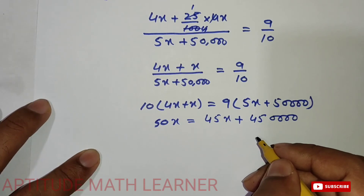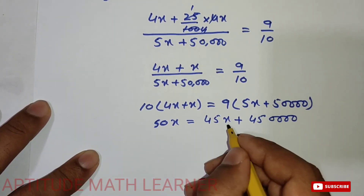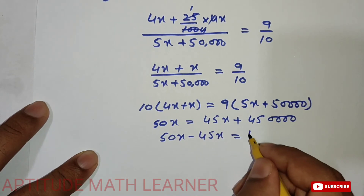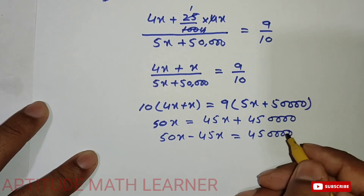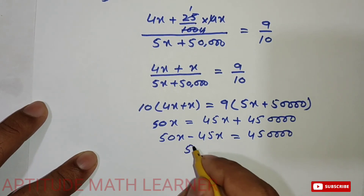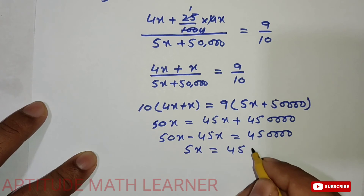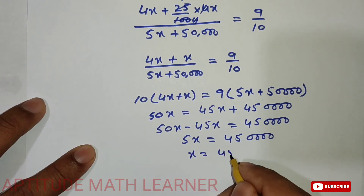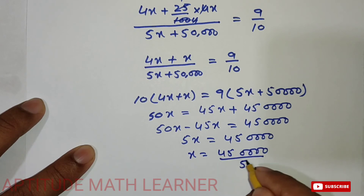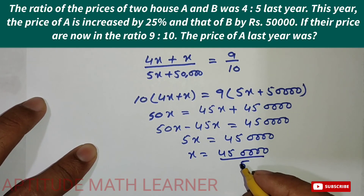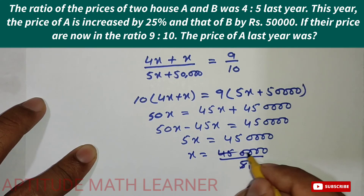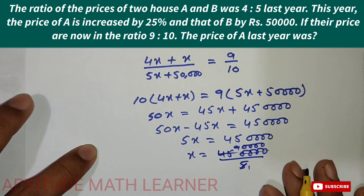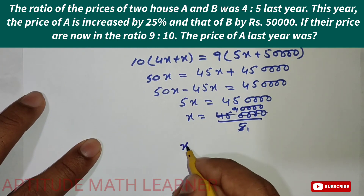Continuing the simplification: 50X minus 45X equals 9 × 50,000, which is 4,50,000. So 5X = 4,50,000. Dividing both sides by 5, we get X = 90,000.